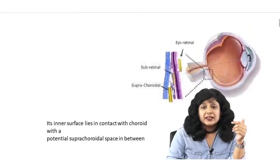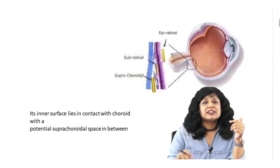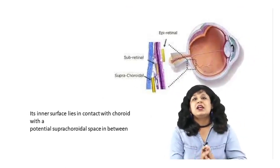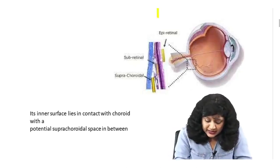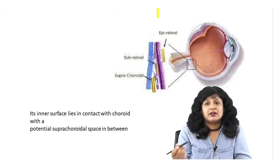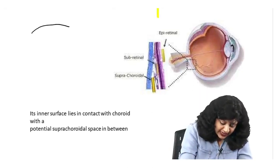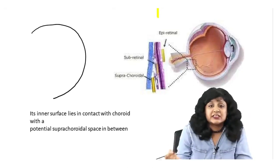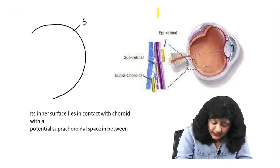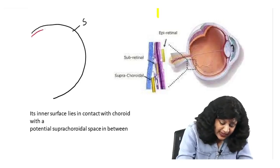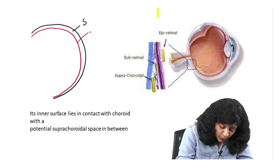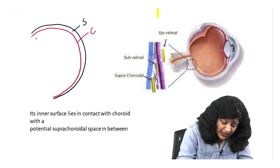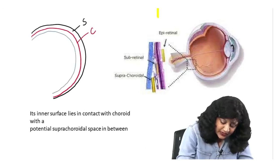If you look at the relation of this sclera with respect to the other coats — I always draw the outermost area in black — so this is your sclera. Then we have the red area, which is your choroid. And even inner to that is your retina.